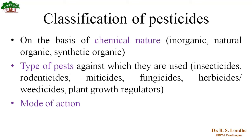Pesticides can be classified on a number of bases. Today we are going to see three types of classification. The first type is based on the chemical nature of the pesticide. On the basis of chemical nature, we can classify pesticides as inorganic pesticides, natural organic pesticides, and synthetic organic pesticides.